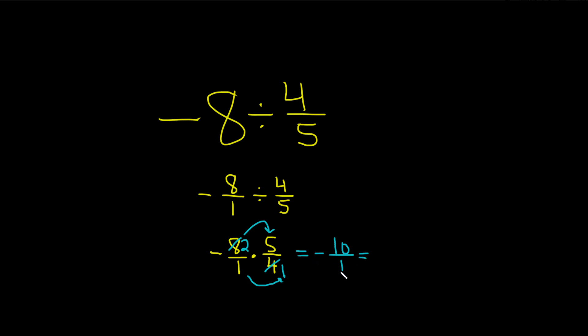And then any number over 1 is a whole number, just like we saw before. This is negative 10. And that would be the final answer. I hope this video has been helpful.